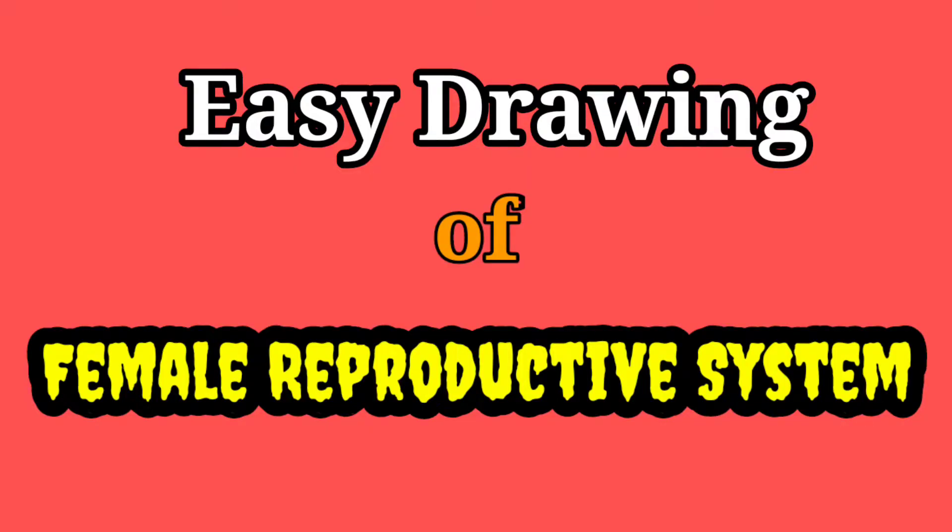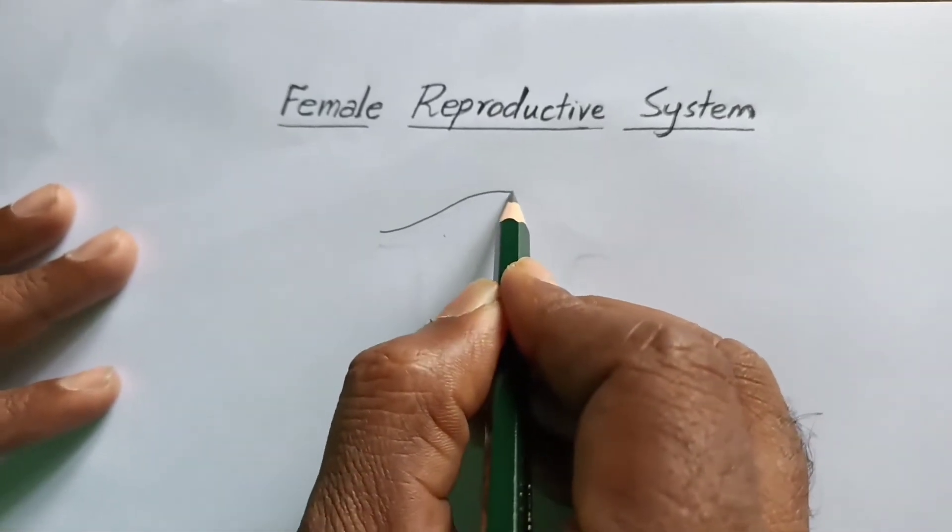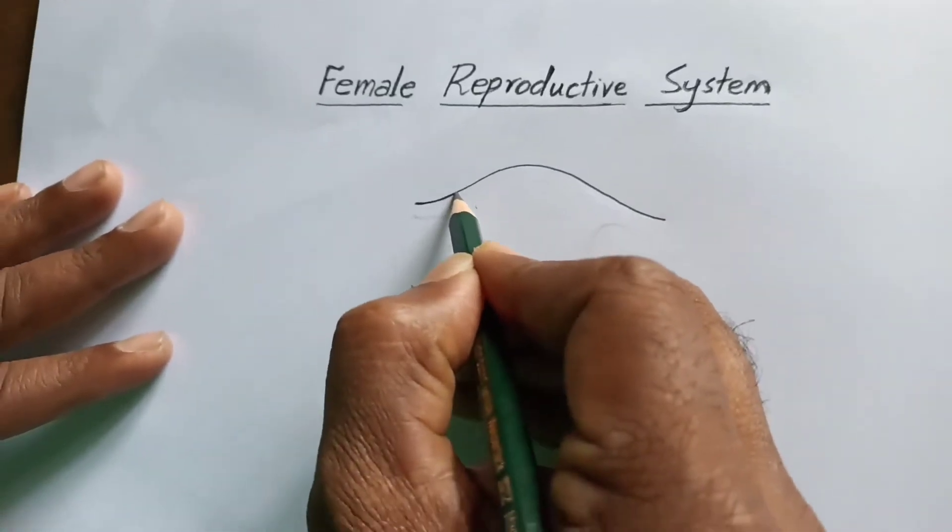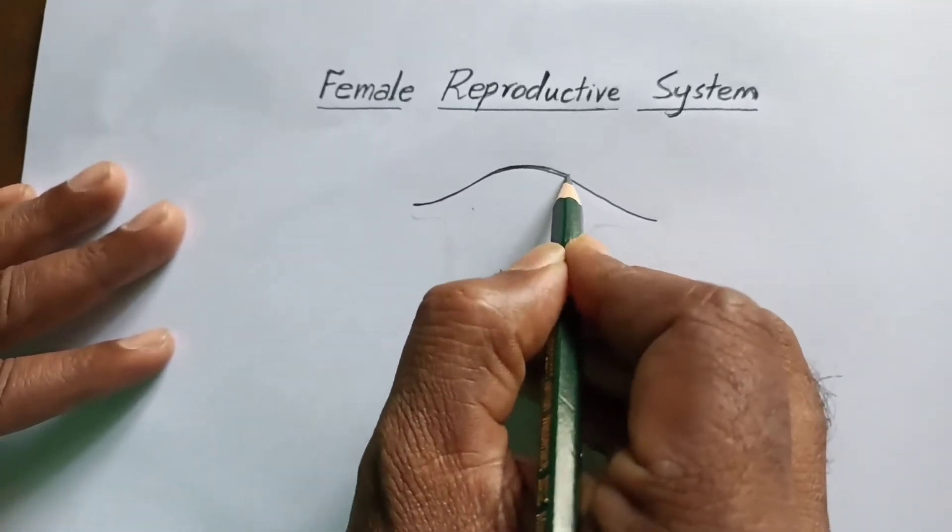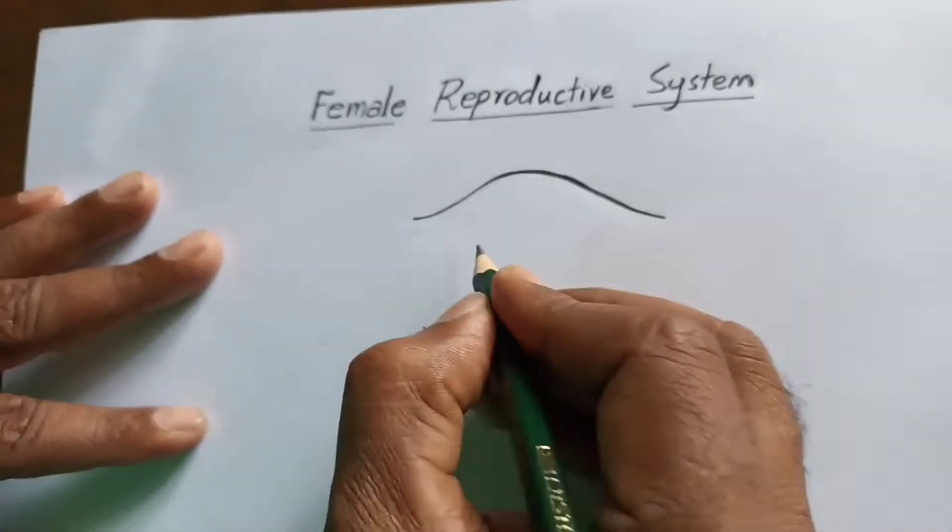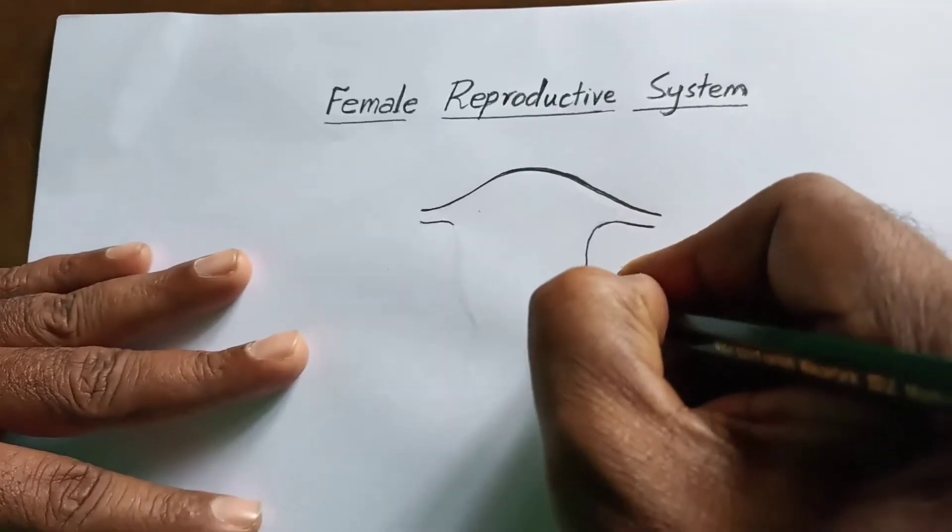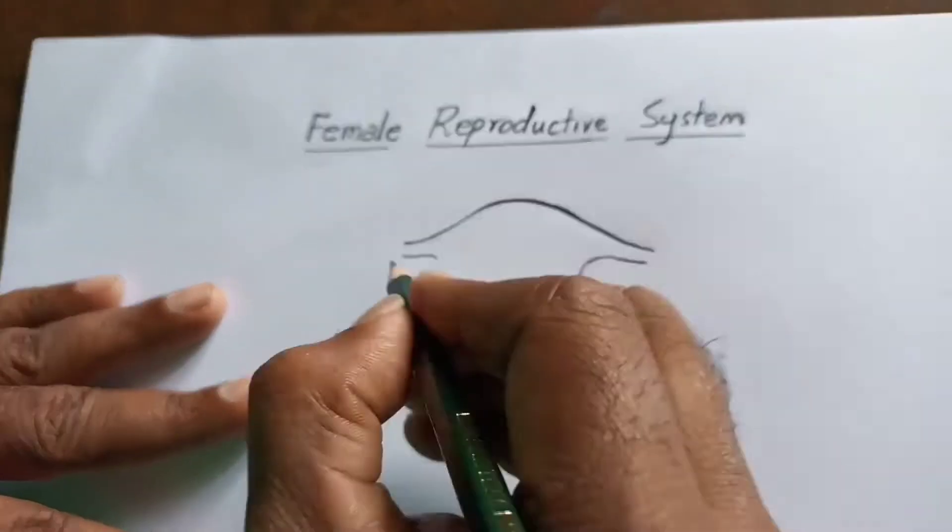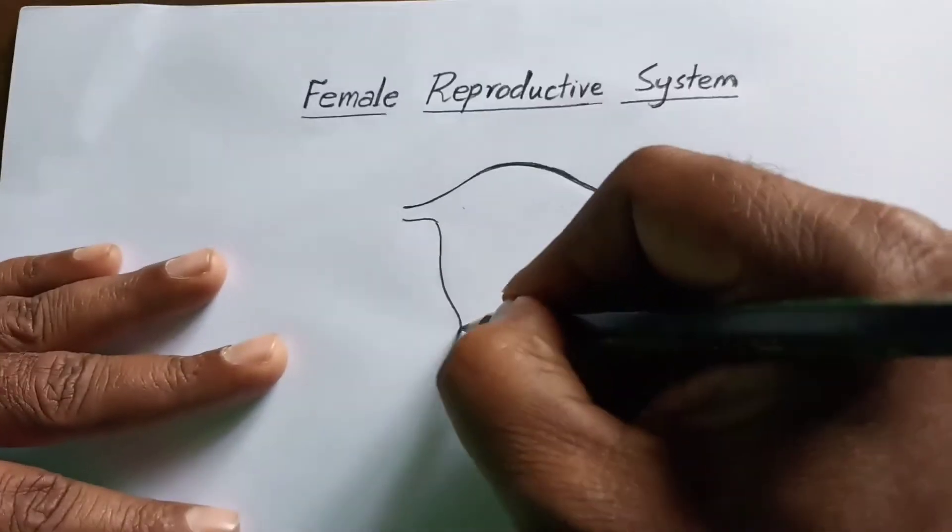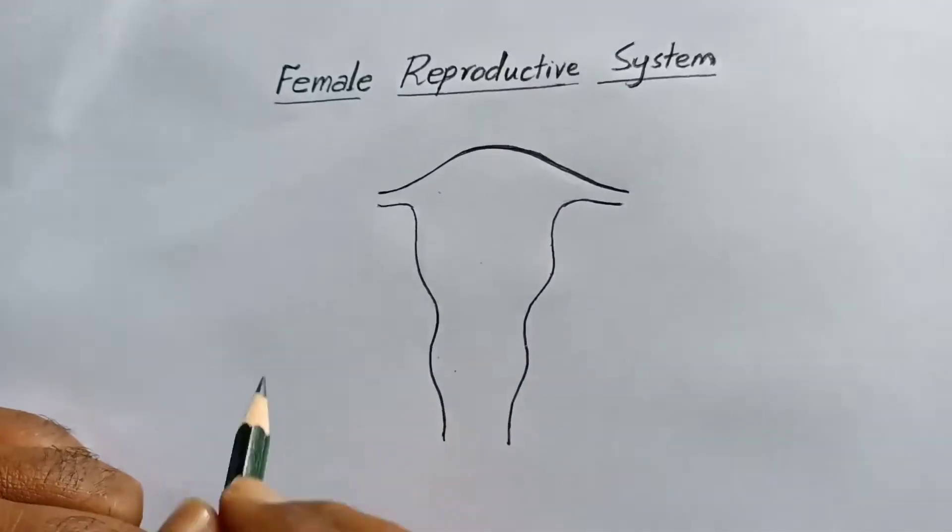Hi, good morning. Today's topic is how to draw the female reproductive system easily. First, you draw some arc like this. Okay, now I'm drawing the uterus. Generally, the uterus is in inverted pear shape. You draw like this.